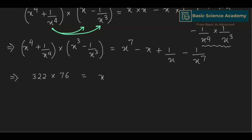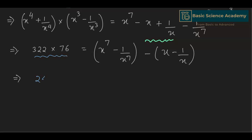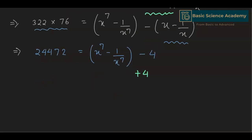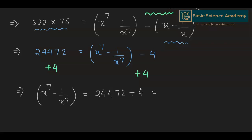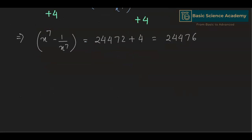This equals x to the power of 7 minus 1 divided by x to the power of 7, minus x minus 1 divided by x. Taking minus 1 common, 322 multiplied by 76 is 24472, equals x to the power of 7 minus 1 divided by x to the power of 7 minus 4. Adding 4 to both sides gives x to the power of 7 minus 1 divided by x to the power of 7 equals 24472 plus 4, which equals 24476. Hence, the answer for part C is x to the power of 7 minus 1 divided by x to the power of 7 equals 24476.